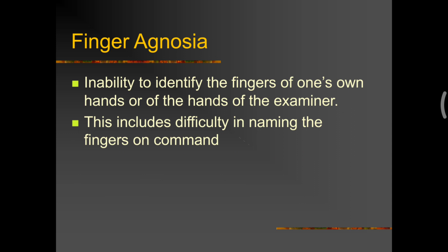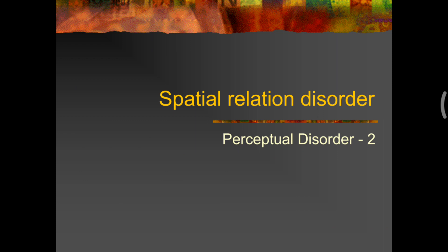Now, the next type of body scheme disorders, finger agnosia, where a person finds it difficult to identify his own fingers. So, he might be misunderstanding his index finger and if you ask him, show me your index finger, he might be showing his ring or his little finger. This includes difficulty naming the fingers on command. So, that completes the portion on body image disorders.